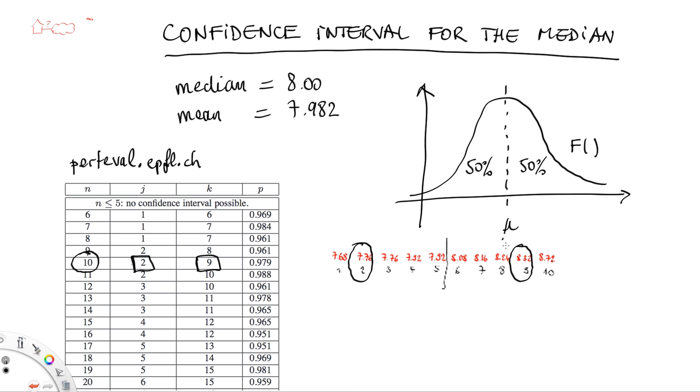In our case, the second value is 7.76. The ninth value is 8.32. Well, the theory says that this is my confidence interval for the median. In other words, I can be 95% sure that the true median mu of the unknown simulator is in this interval.